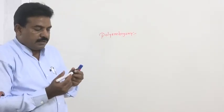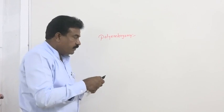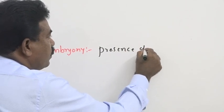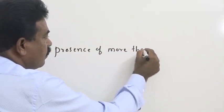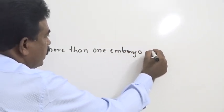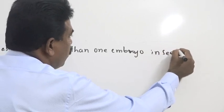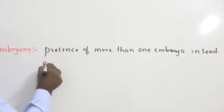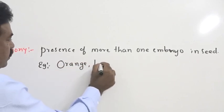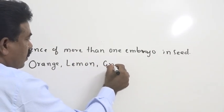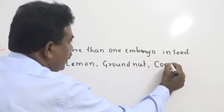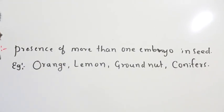Another important term with respect to sexual reproduction in flowering plant, polyembryony. Presence of more than one embryo in seed is called polyembryony. Mainly, we see in the field of plants like orange, lemon, groundnut. Then the members of gymnosperms, mainly the conifers, they show polyembryony.